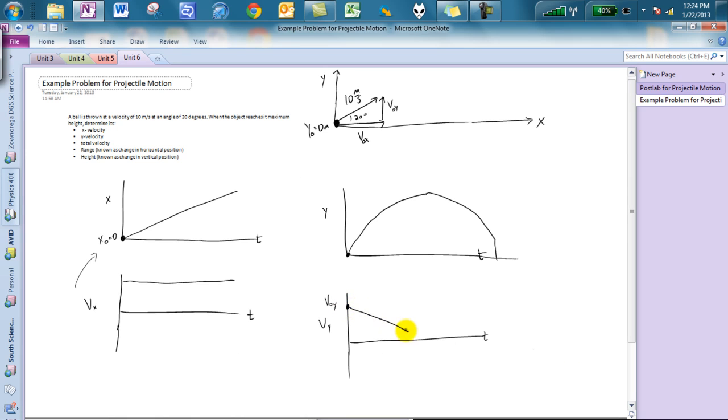So that's my initial velocity in the y direction, and again, the slope of this graph is equal to negative 9.8 meters per second squared. How do I know this? Because we are on Earth, and it acts as an object in free fall in the y direction. So that would be the graph portion of this.